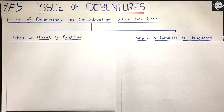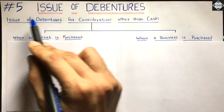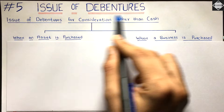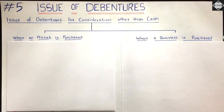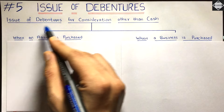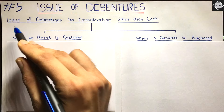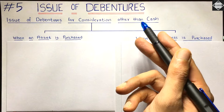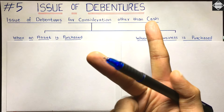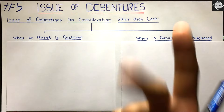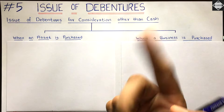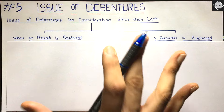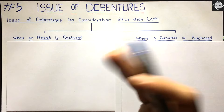Hi everyone, welcome back to Saheb Academy. Today in this fifth video of the chapter 'Issue of Debentures', we are going to discuss how debentures can be issued for consideration other than cash. We have two different scenarios and two practical examples we are going to solve in this video.